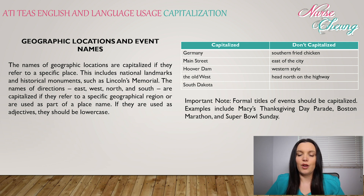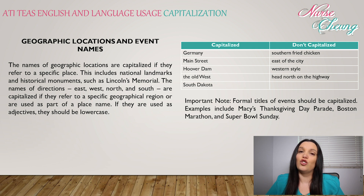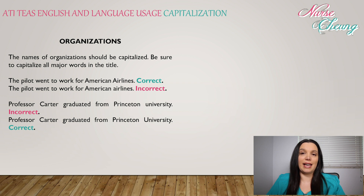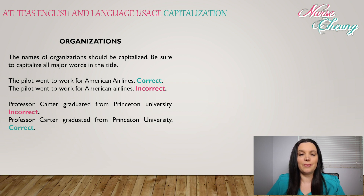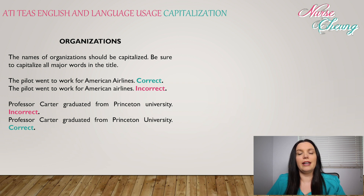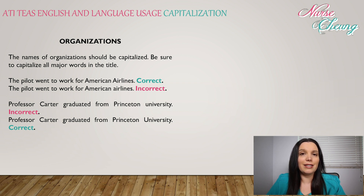Important note: formal titles of events should be capitalized. For example, Macy's Thanksgiving Day Parade, the Boston Marathon, and Super Bowl Sunday. The names of organizations should also be capitalized — be sure to capitalize all major words in a title. For example, 'The pilot went to work for American Airlines' is correct because both words are capitalized. However, writing 'American airlines' is incorrect because 'airlines' in 'American Airlines' is not capitalized, and that is the name of an organization.